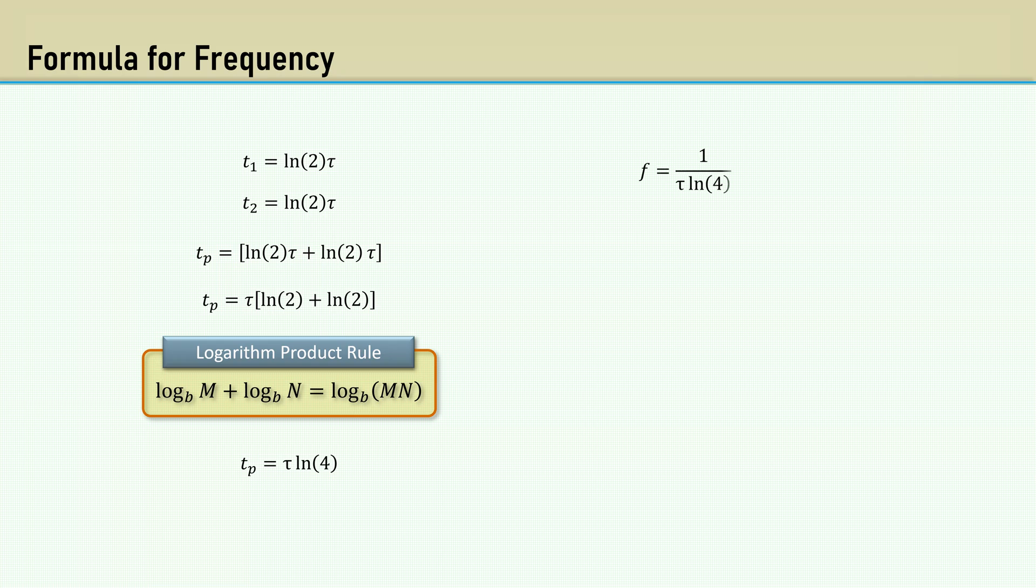The frequency is the reciprocal of the period. Replacing tau with RC, we can rearrange to solve for R, since it's common to select the capacitor value first.